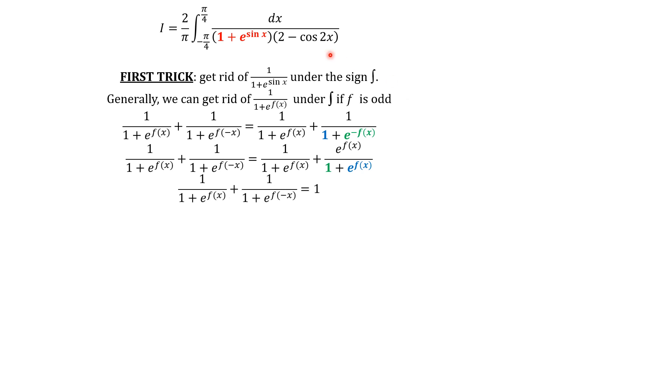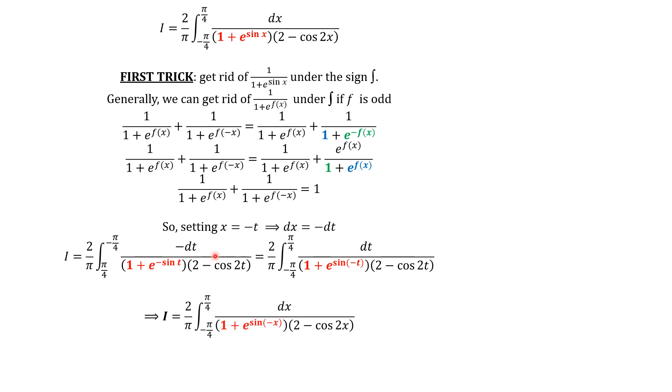The way to get rid of this term, as we said, is to perform this substitution x equals minus t to have another expression from I. And then, we sum both expressions to get rid of this term. We show you how to do in this case. This substitution is going to give us this because dx is minus dt. And here, we have e to negative sin t. And we know that t is a dummy variable. So, we can call t x and then I equals this.